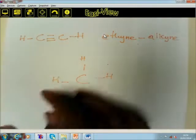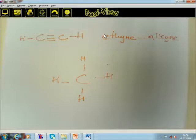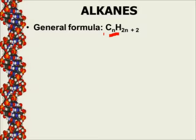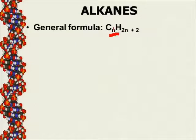That is the structure for methane. This general formula helps you to predict the name of the compound by just looking at the number of carbons. For example, let's say you've got 5 carbons: 2 multiplied by 5 plus 2 gives you 12. So 5 carbons and 12 hydrogens, and the name there will be pentane.